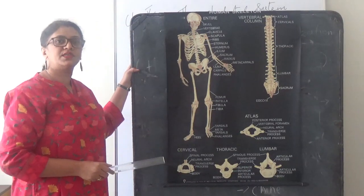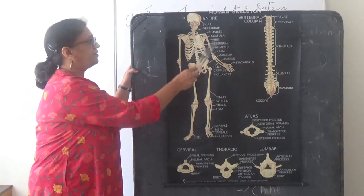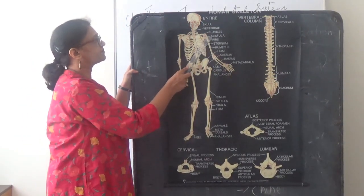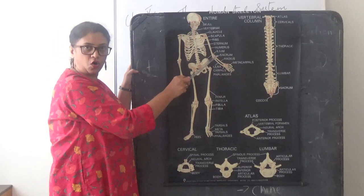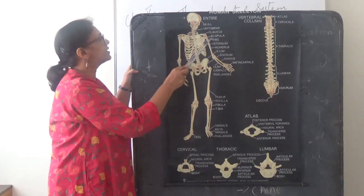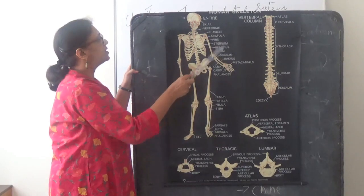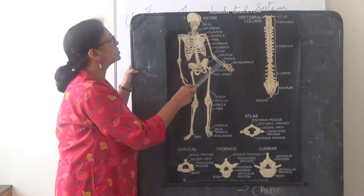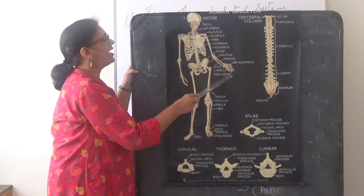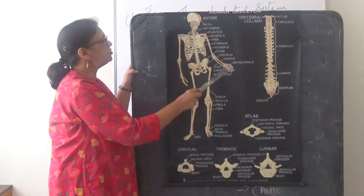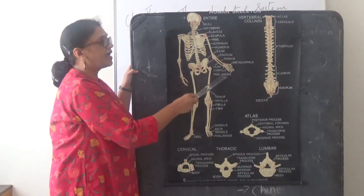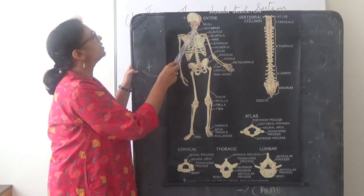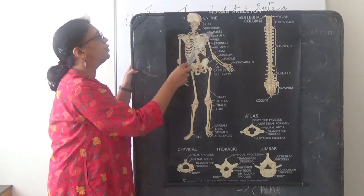Next we come to the bones in our limbs. We have two pairs of limbs: the upper limbs and the lower limbs. The upper limbs are made up of three regions. The region from the shoulder to the elbow is the upper arm, which has a single bone called the humerus. The region from the elbow to the hand is the forearm, which has two bones: the radius and ulna. In the hand, the wrist bones are called carpals, the bones in the palm are called metacarpals, and the bones in the fingers are called phalanges. The arm is joined to the backbone with the help of a collar bone called the clavicle.